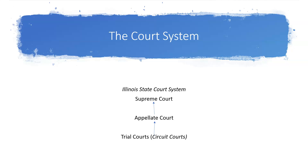The appellate court does not retry the case — it doesn't convene the parties together with all the witnesses. Instead, the appellate court will review what the trial court did and determine whether errors of law were made based on interpretation of the rules of law, such that those errors may have affected the outcome of the case.